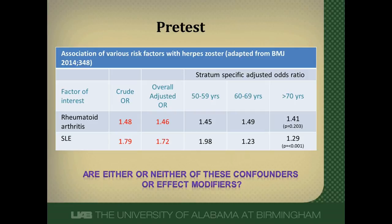This is a table I adapted from the BMJ that looked at various risk factors — in this case, rheumatoid arthritis and lupus — and their effect on herpes zoster. The authors looked at different age strata to see if age had a differential effect on those associations. I want you to think about whether age is an effect modifier, a confounder, or neither. Pause the video, think about it, then restart and we'll go through it together.